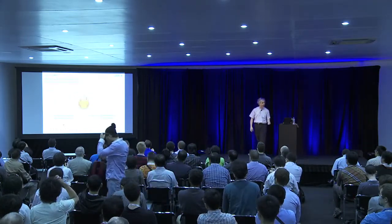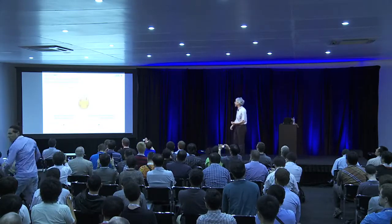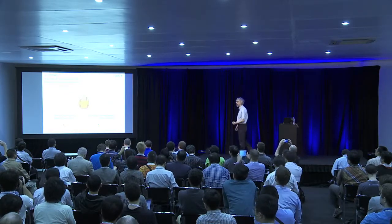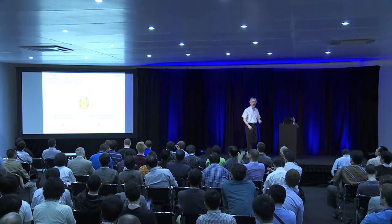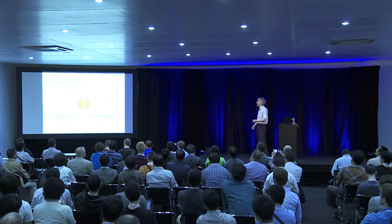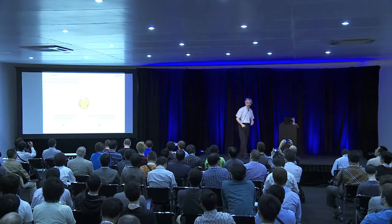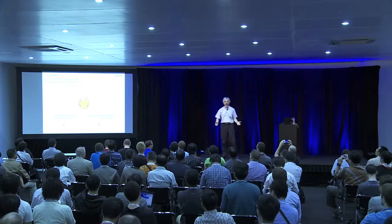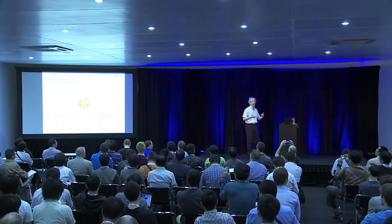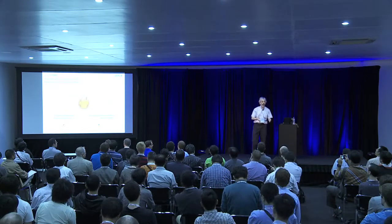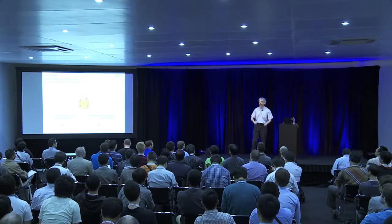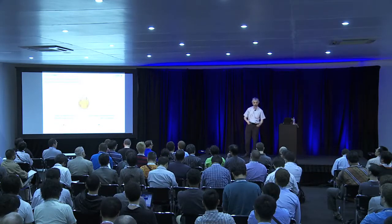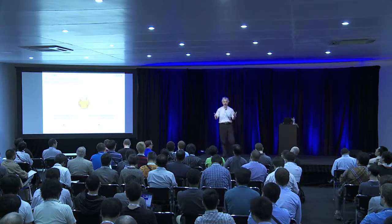Recovery point objective, RPO, and recovery time objective, RTO, are two key concepts in disaster recovery. RPO says how much data am I willing to lose in the event of a disaster — how far back in time will that disaster take me? The less data I want to lose, the more expensive the solution. An RPO of zero means I lose no data, while an offsite backup may have an RPO of 24 hours. The lower the RPO, the more expensive the solution in general.